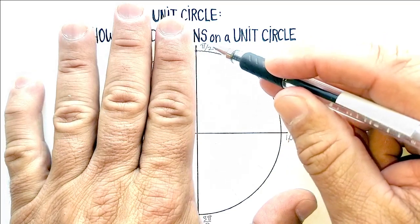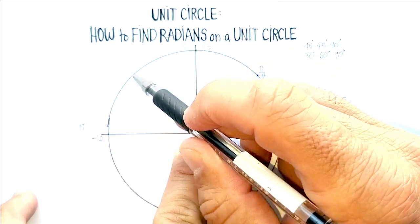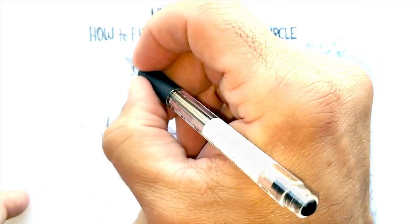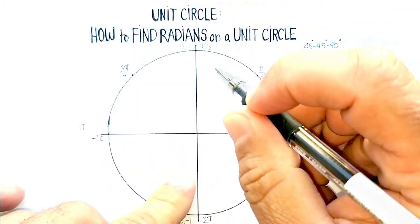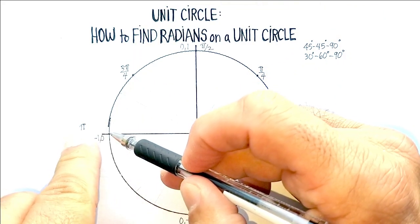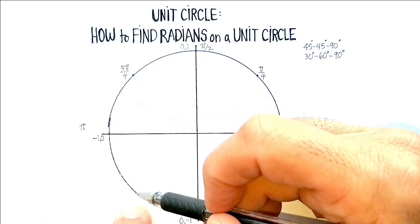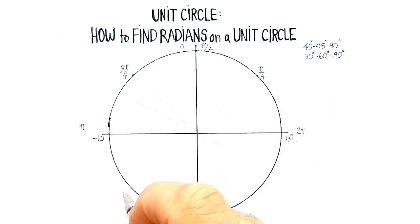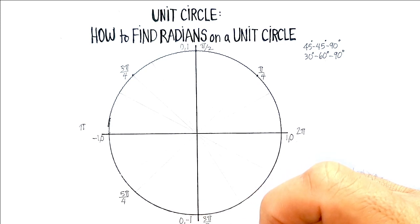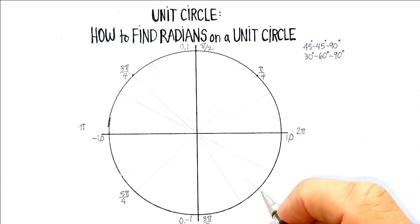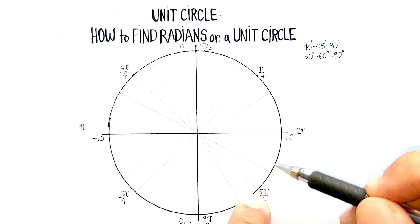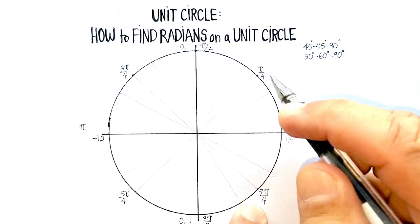Three-fourths will be right about there. So this would be three pi over four. Four-fourths would be just one whole pi. Five-fourths would be right here, or five pi over four. Six-fourths would be reduced to three over two pi. And then finally here will be seven over four, or seven pi over four. So again, these coordinates have names in terms of radians.